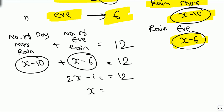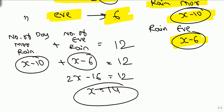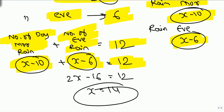From 2x minus 16 equals 12, we get x equals 14 days. This works because if it rains in the morning it cannot rain in the evening, and vice versa. Ten mornings were clear, six evenings were clear, and in total it rained for 12 days — so their stay lasted 14 days.